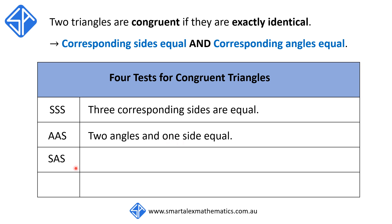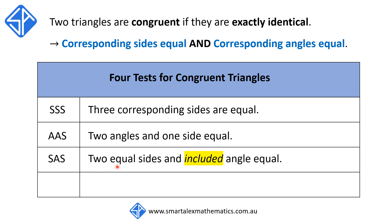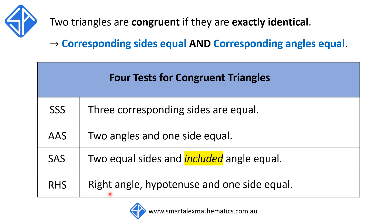The third test is the SAS test. In this test, we need to show that the two triangles have got two equal corresponding sides, and the included angle between the two sides must also be the same. And the last test is the RHS test. In this test, we need to show that both triangles have got a right angle, the hypotenuse of both triangles are the same, and one corresponding side of both triangles are equal.